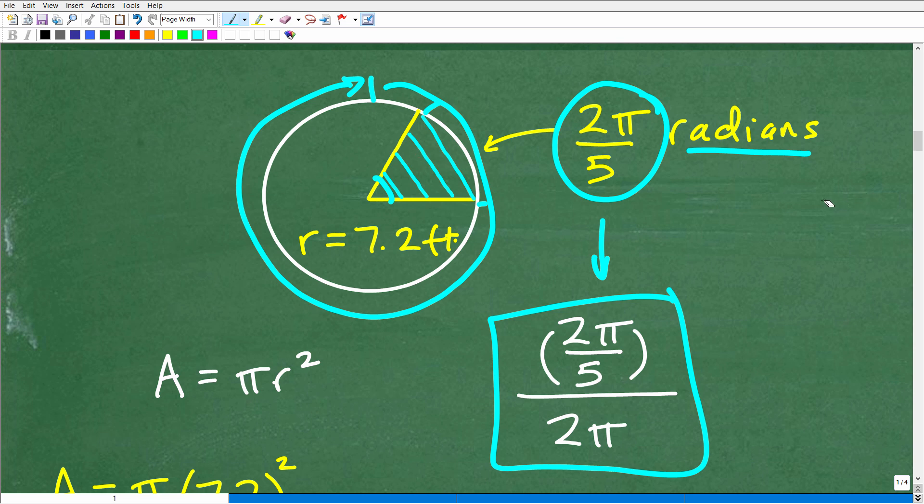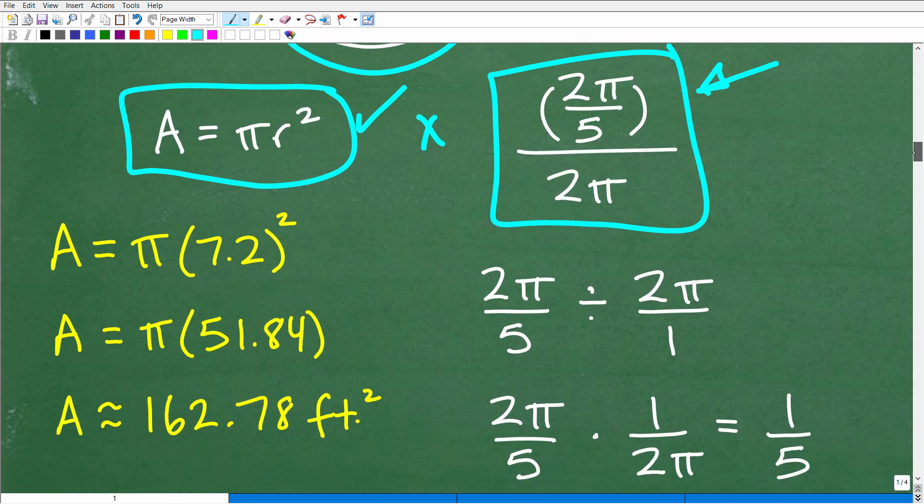You can see how this is the same setup as the previous problem. But nevertheless, we still have to find the area of the full circle, area equals πr². We have the radius, 7.2 feet squared. And then we're just going to multiply the area of the entire circle by this right here. So we'll clean this up here as well. So let's go and see this work.